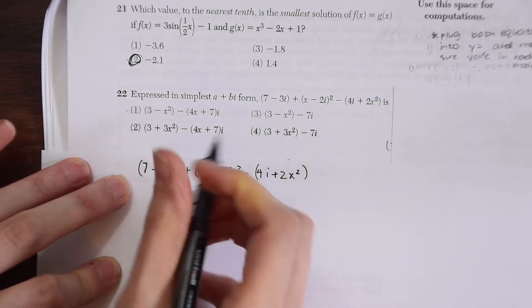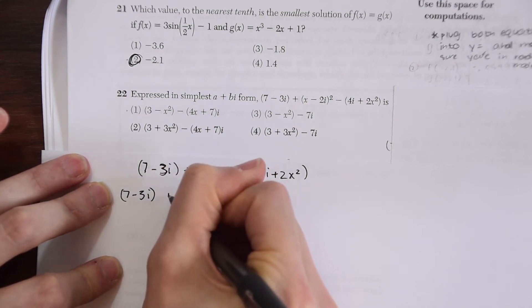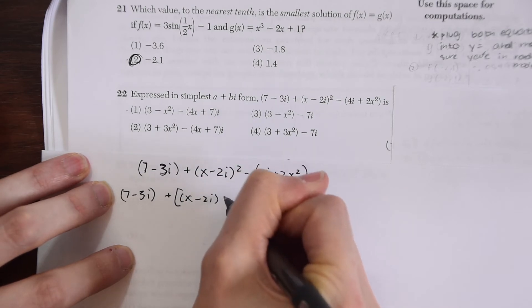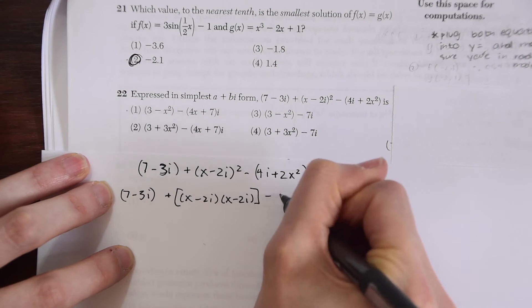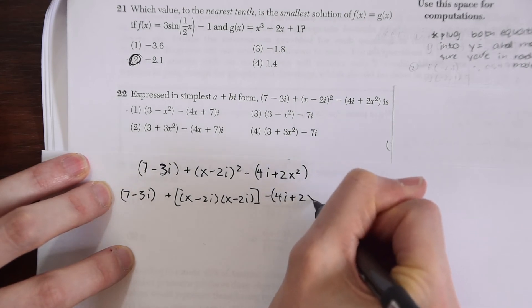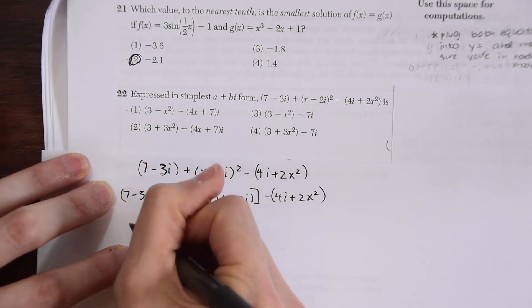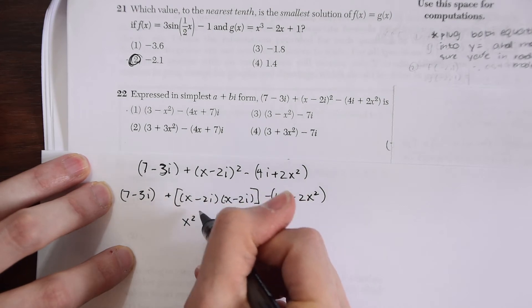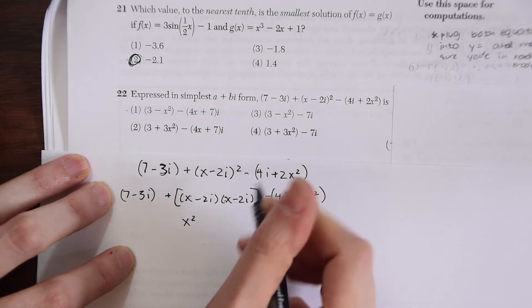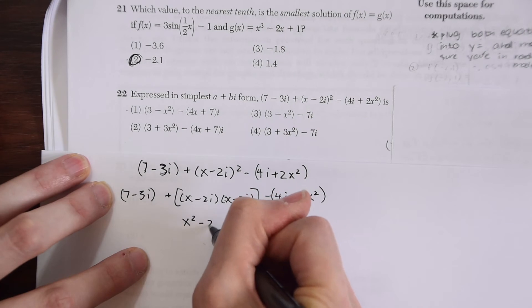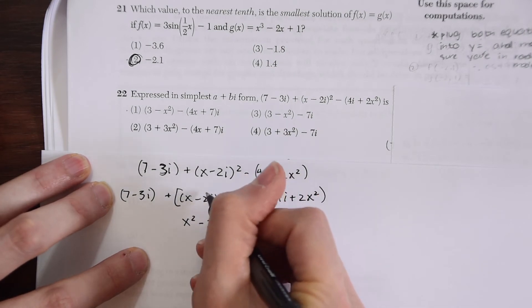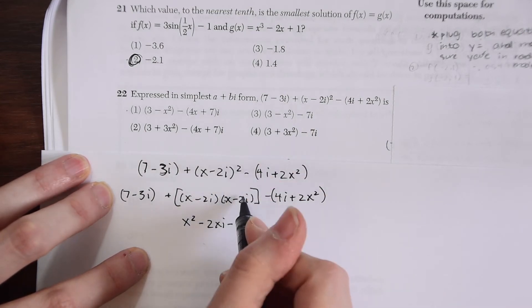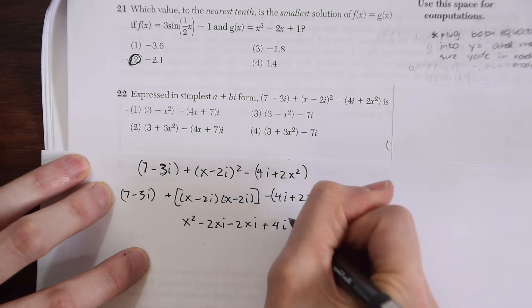7 minus 3i plus (x minus 2i) squared minus (4i plus 2x) squared. Let's expand this. We have this binomial in the center here. When we expand, we get (x minus 2i) times (x minus 2i), and then everything else stays the same. When we expand this, let's distribute everything. We have x squared, x times x. Then we have x times minus 2i, so minus 2xi. Then we have negative 2i times x, we get the same thing, minus 2xi again. Minus 2i times minus 2i gives us positive 4i squared.